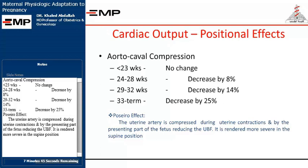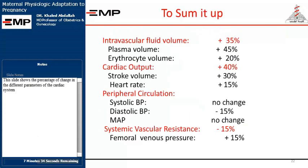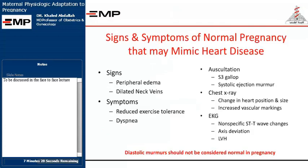The Poseiro effect: the uterine artery is compressed during uterine contractions and by the presenting part of the fetus, reducing uteroplacental blood flow. It is rendered more severe in the supine position. A slide shows the percentage of change in the different parameters of the cardiac system, to be discussed in the face-to-face lecture.